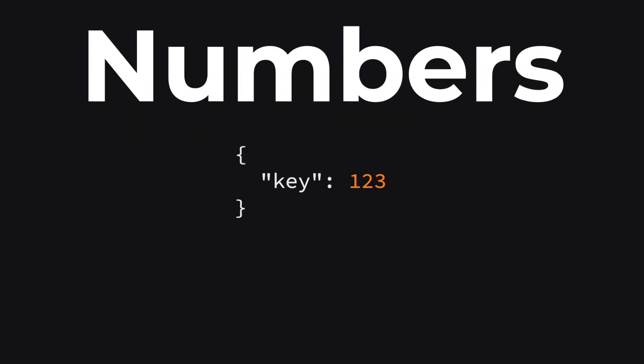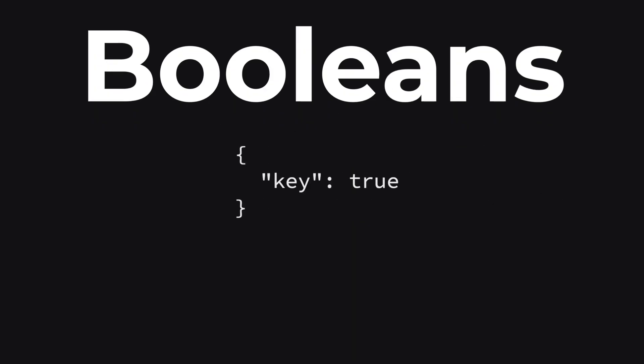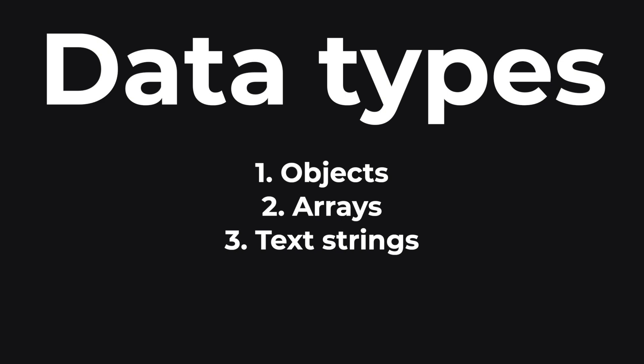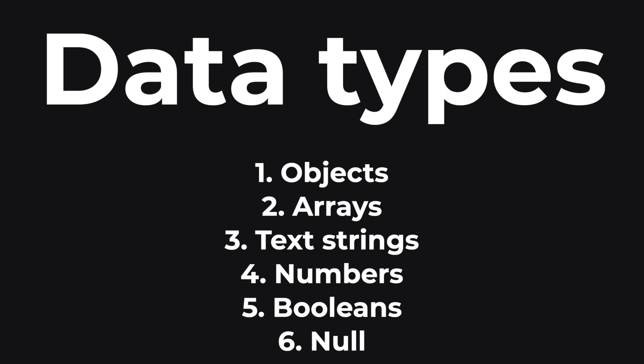Numbers can be any numeral without quotes around them — they can be integers like 42, or decimals like 3.14. Booleans are simple true or false values, written as true or false without quotes. Null represents a null value, basically used to denote nothing or a lack of value, and it's written as null without quotes. Now that we have learned all the technical parts, let's see if we can use this API with a JSON response in a real web application.